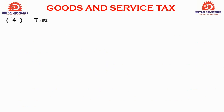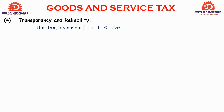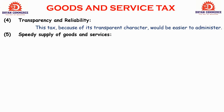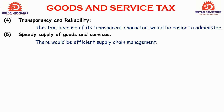Next benefit: transparency and reliability. Because of its transparent character, GST is easier to administer. GST is paid online, so the whole procedure is transparent, meaning tax evasion is harder and administration is simpler. There would also be an efficient supply chain management — manufacturer to wholesaler to retailer to customer — which is speeded up under GST, increasing turnover.